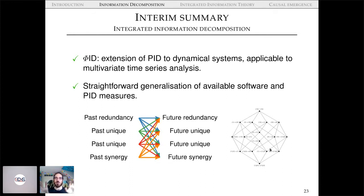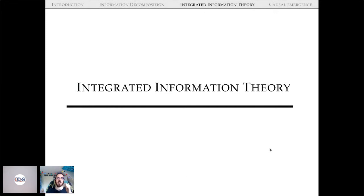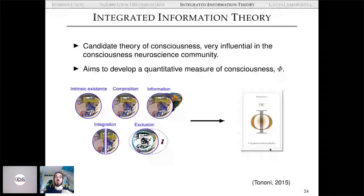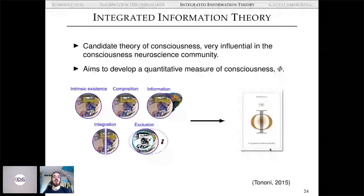Now let's see what we can do with Φ-ID in the context of integrated information theory. IIT is a theory of consciousness that says the informational properties of a physical substrate — like a brain — can tell us whether a system is conscious or having a particular conscious experience. It aims to develop a quantitative measure of consciousness, Φ, based on information theory.